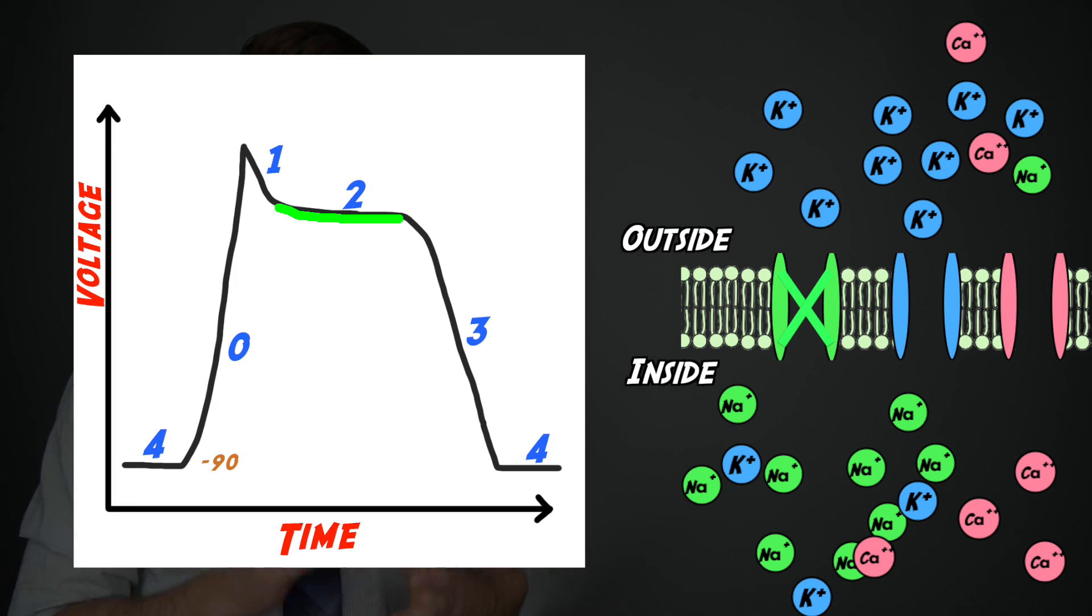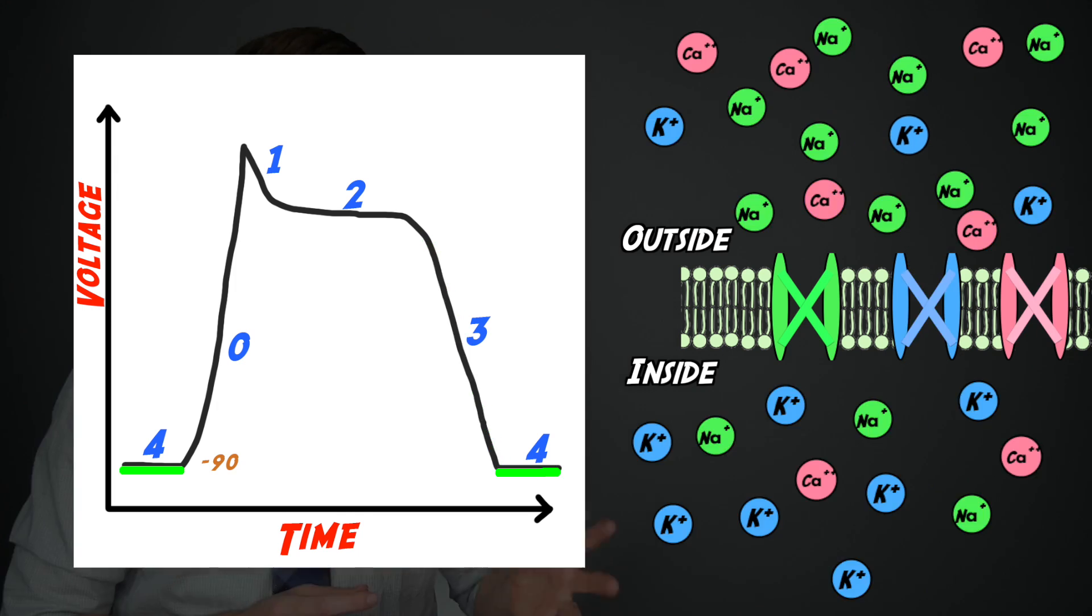After this plateau phase, repolarization occurs as potassium ions leave the cell and eventually those channels close. Finally, in the last phase, the sodium-potassium pump restores this resting balance by transferring potassium and sodium ions, and some of the calcium gets actively pumped back out and into those packages inside the cell to allow for the next electrical impulse to come through and squeeze and contract and continue this cycle all over again.